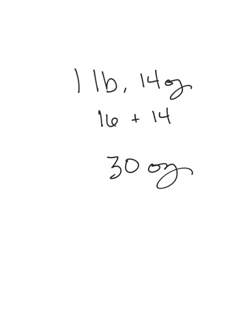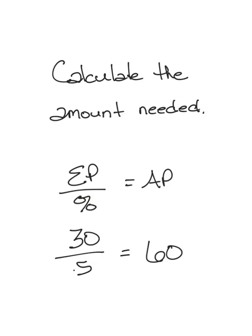Let's begin by converting our edible portion weight to the lowest common unit, which in this case is ounces. 1 pound is equal to 16 ounces. We need 1 pound 14 ounces, so we need 16 plus 14 ounces, for a total of 30 ounces. Now we're ready to calculate the amount needed.